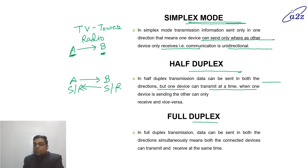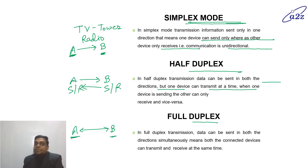In full duplex mode, both devices A and B can send and receive data simultaneously. At the same time A can send and B can send; at the same time A will receive and B will receive. So this is known as full duplex mode — simultaneous transfer is possible, and both can transmit and receive at the same time.